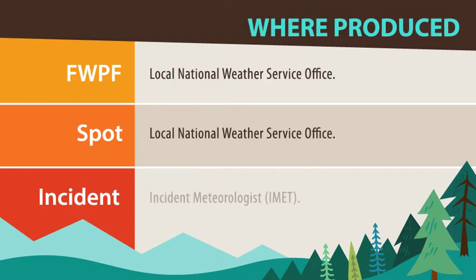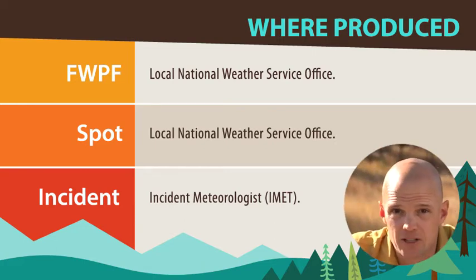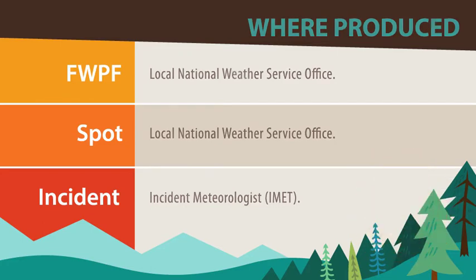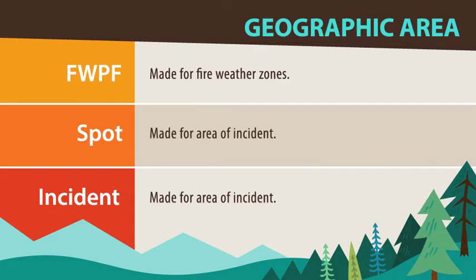Both the fire weather planning and spot forecasts are produced by your local National Weather Service Weather Forecasting Office. The incident forecast is produced by an incident meteorologist, or IMET, who is generally on-site at the incident. Fire weather planning forecasts are produced for fire weather zones, which are generally county-sized areas of land with similar climate, weather, and terrain characteristics. Both spot and incident forecasts are produced for the area of the incident.